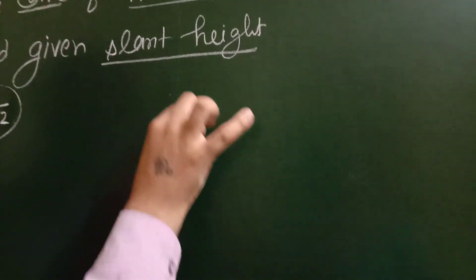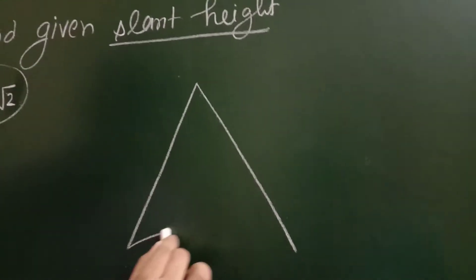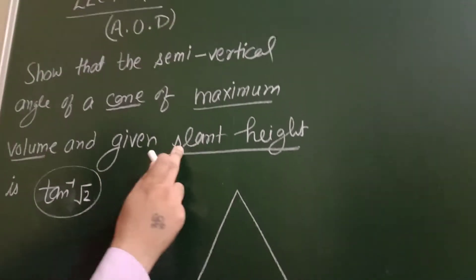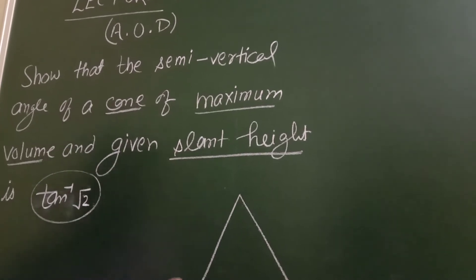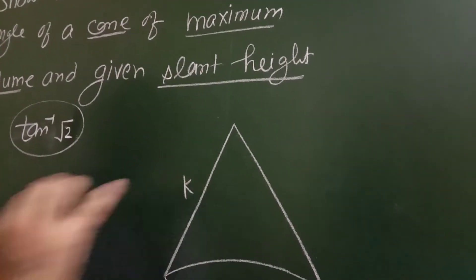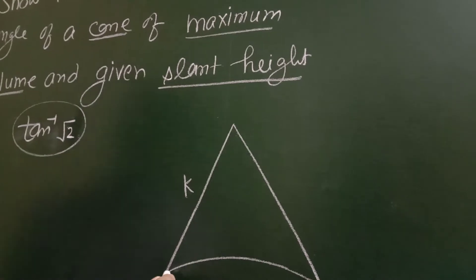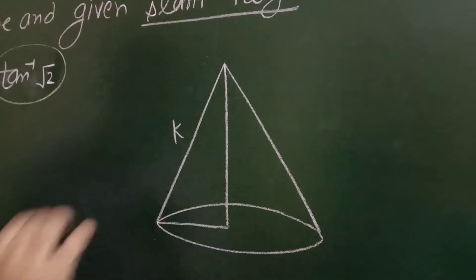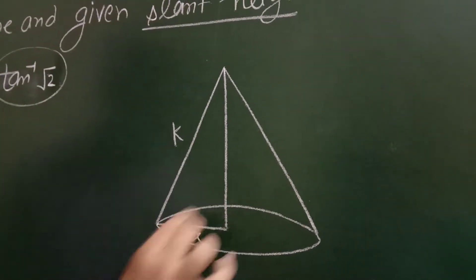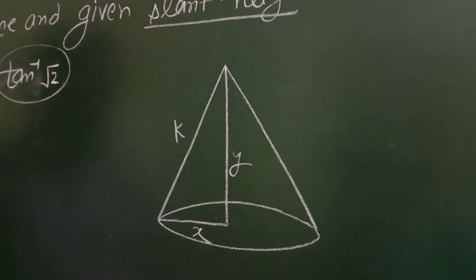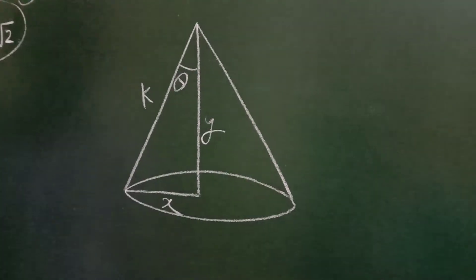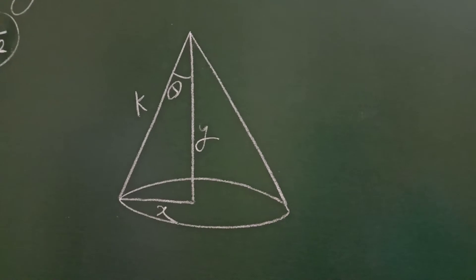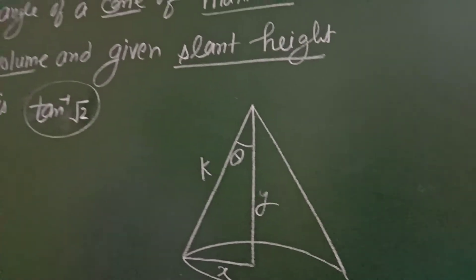For example, I have a cone. The slant height is given, so it is constant and fixed, but radius and height can be varied. If I change the radius to x and height to y, then this is the semi-vertical angle. When the volume is maximum, the semi-vertical angle is tan⁻¹(√2).